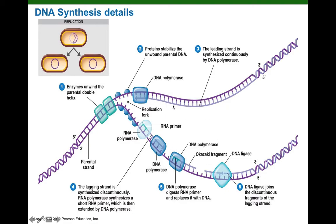Although we can't see it up here, somewhere back here there would have been a little RNA primer made by primase. DNA polymerase 3 would have come along, knocked it off, and then continued making DNA using the little RNA primer, synthesizing the DNA 5' to 3' and anti-parallel to the template.